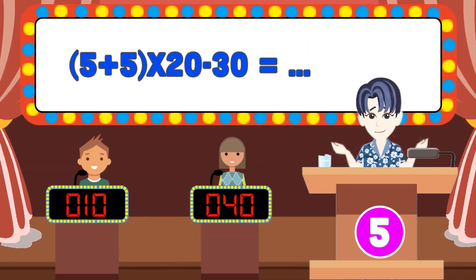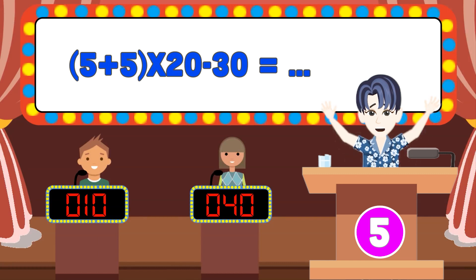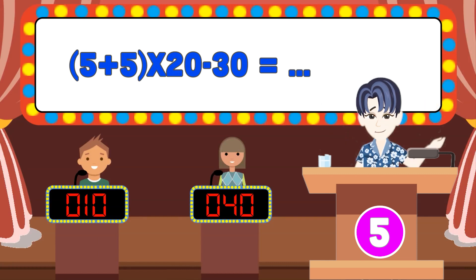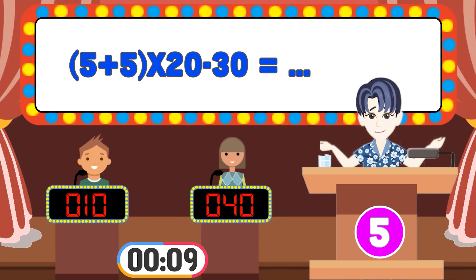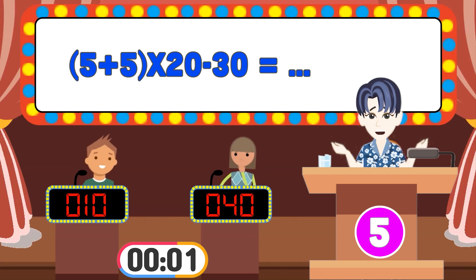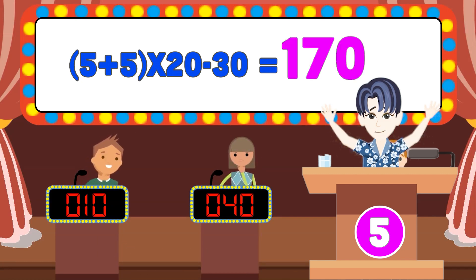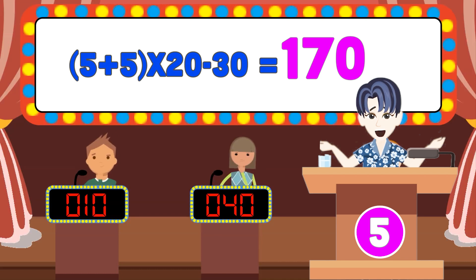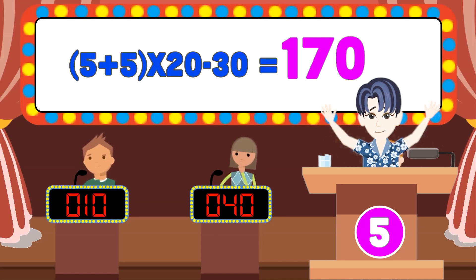Question five: Can you do this math so that M3GAN can be awakened? The right answer is one hundred and seventy. Have you awakened her yet?